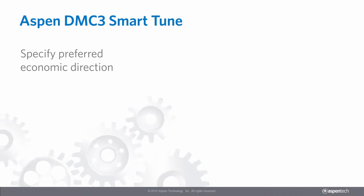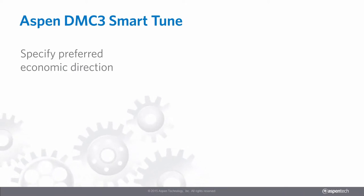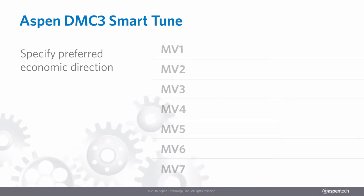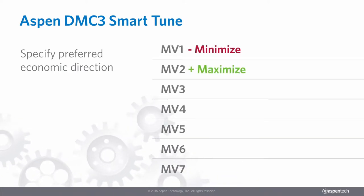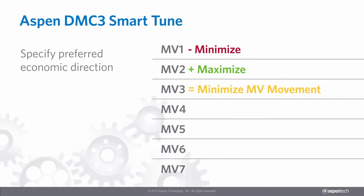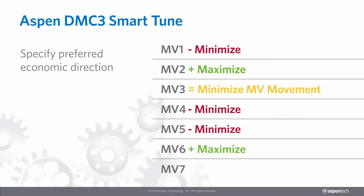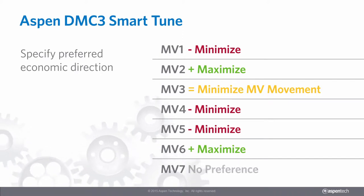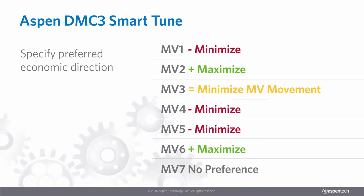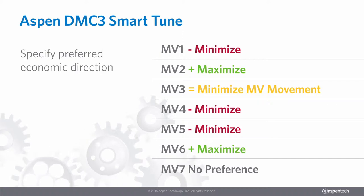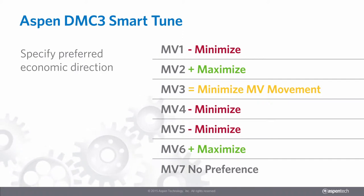Configuring a controller with SmartTune is simple and straightforward. First, the preferred economic direction for each MV is specified. You can say you want to minimize, maximize, or minimize the movement for each MV. If there is no preference for an MV or its economic direction is unclear, you can leave the MV unassigned. These degrees of freedom will be utilized later in the workflow.